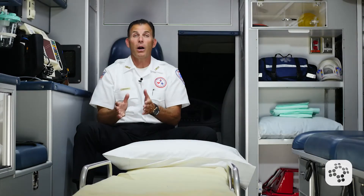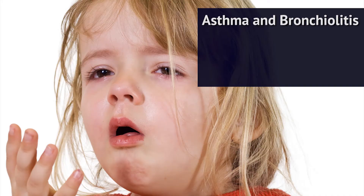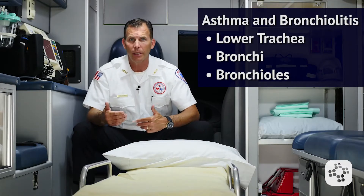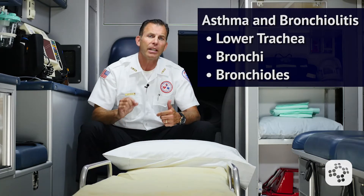We're going to talk about respiratory distress as it affects the lower airway. Conditions such as asthma and bronchiolitis cause an obstruction of the lower airway in the lower trachea, the bronchi, or the bronchioles. In contrast to upper airway obstructions, lower airway obstructions are typically more apparent during the expiratory phase of the respiration cycle.